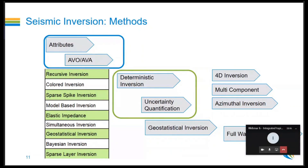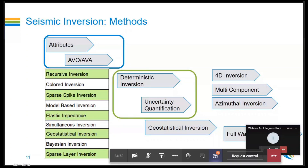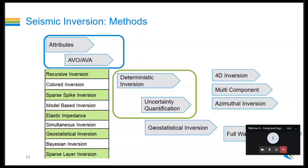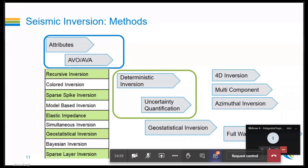In my examples I will assume we are in a clastic setting where sands are loose. Shale has higher acoustic impedance compared to sand — this is a simplifying assumption. It does not mean sands always have lower acoustic impedance than shale; depending on geological conditions and depositional environment there are many variations. But I shall use this assumption throughout.